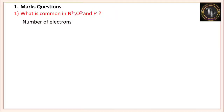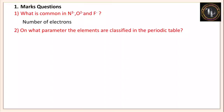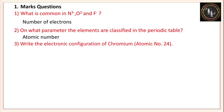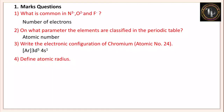On what parameter are elements classified in the periodic table? On the basis of atomic number, elements are classified in the periodic table. Write the electronic configuration of chromium — chromium's atomic number is 24. The correct electronic configuration is [Ar] 3d⁵ 4s¹.